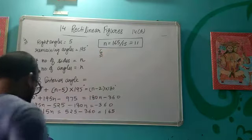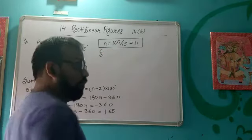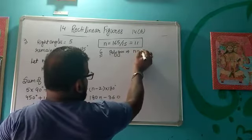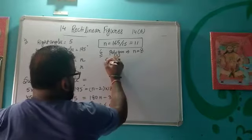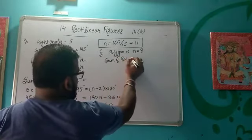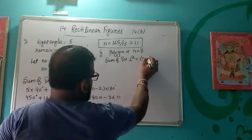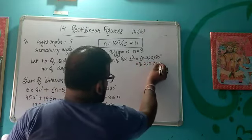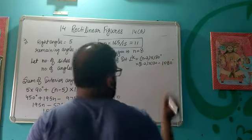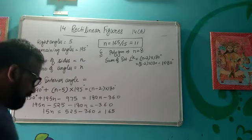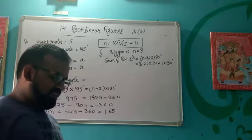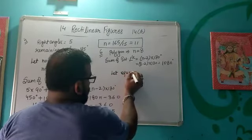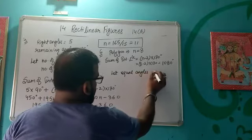In question number 6, two angles of an eight-sided polygon are given. Since it's eight-sided, n equals 8. We calculate the sum of interior angles: (n−2)×180 = (8−2)×180 = 1080 degrees. The two given angles are 142 and 176, and the remaining angles are equal to each other. Let the measure of equal angles equal to x.